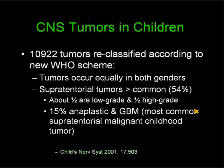Let's look at data from an article published five years ago. They took almost 11,000 tumors and reclassified them according to the new WHO scheme. Tumors in children occur equally in both genders — contrary to traditional teaching. Also, 54% occur supratentorially, not predominantly infratentorially as often assumed. Of those in the cerebral hemispheres, about half were low-grade and half were high-grade. Of the high-grade tumors, 15% were highly malignant gliomas, and GBM was actually the most common malignant supratentorial childhood tumor in this series. In this case, the diagnosis was a glioblastoma multiforme.